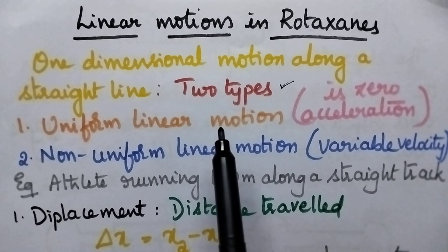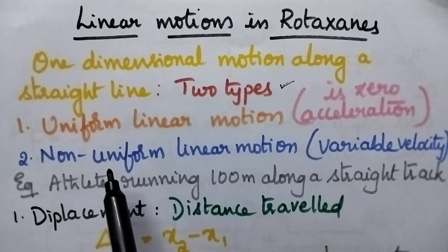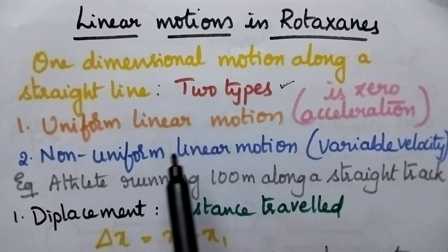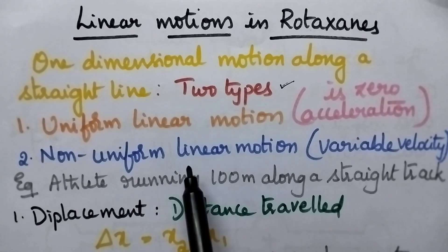Linear motion means that is nothing but one dimensional motion along a straight line. Linear motions can be simply classified into two types: one being uniform linear motion and the other one is non-uniform linear motion.